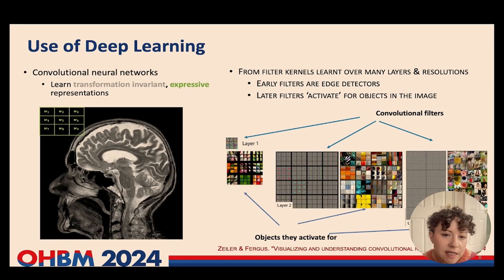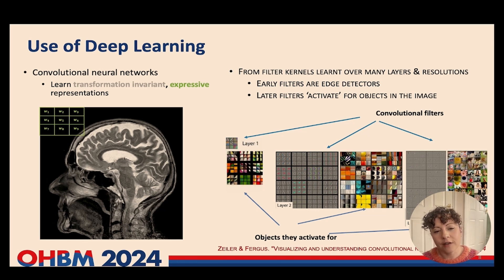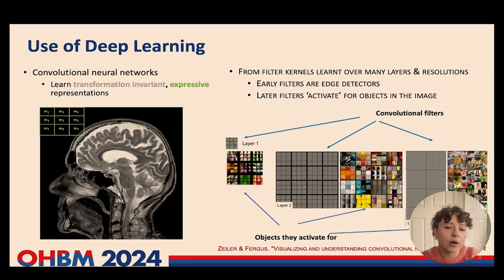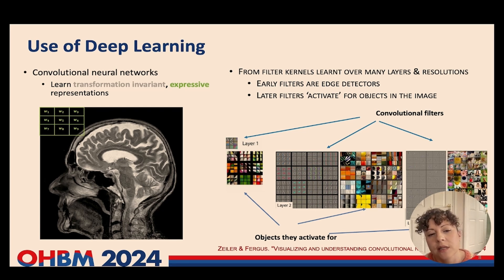For all these reasons, I'm here to advocate for the use of deep learning. The reason for that is that deep learning for images arose to deal with this very problem — to allow us to compare images without them having to be aligned at all. The most well-known deep learning framework for image understanding is a convolutional neural network.